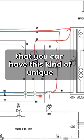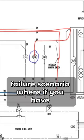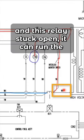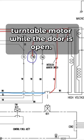So it's because they have this relay here that you can have this kind of unique failure scenario where if you have specifically this switch stuck closed and this relay stuck open, it can run the turntable motor while the door is open.